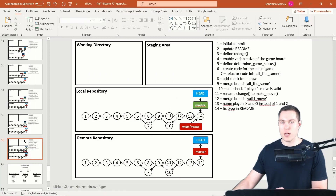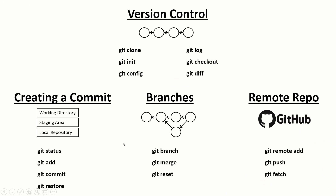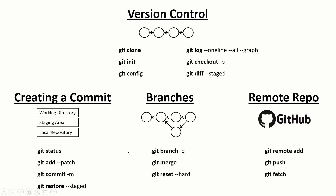Since we've covered a lot of different commands, I've put them all together on one slide. Here are commands related to version control in general — initializing git or cloning a repository — then commands for inspecting commit history, creating commits, working with branches, and working with a remote. The slide also lists all the options for these commands that we used throughout the tutorial.